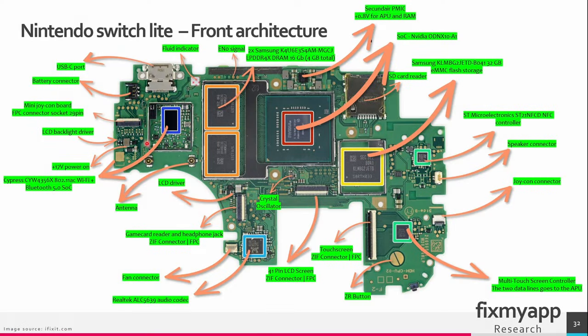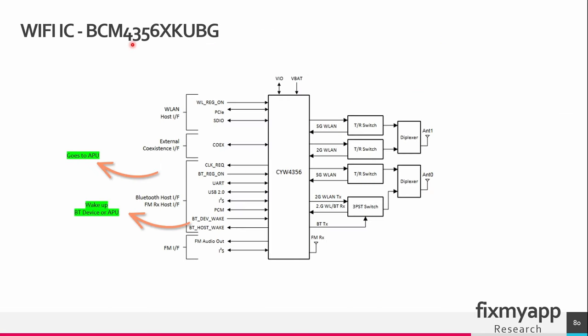The WiFi and Bluetooth connectivity is located here — these are the antennas. The WiFi IC BCM435 is used in the Nintendo Switch Lite version 1, version 2, and the OLED version. This WiFi chip provides WiFi and Bluetooth connectivity along with dual band support. The chip supports 2.4GHz and 5GHz frequency bands for WiFi connectivity, which is needed for compatibility with a wide range of WiFi networks and better performance in high-interference environments.